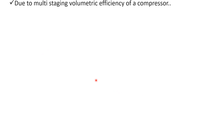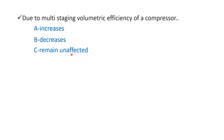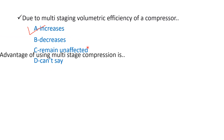Next question: due to multi-staging, the volumetric efficiency of a compressor — Option A: increases, Option B: decreases, Option C: remains unaffected, Option D: can't say. The right answer is Option A — increases. Jab bhi multi-staging ki jaati hai compressor mein, to uski volumetric efficiency increase ho jaati hai.